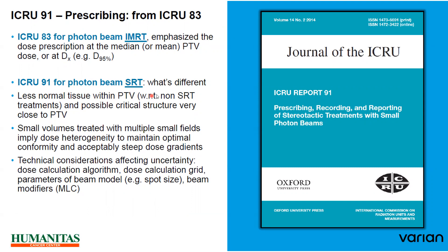In SRT there is less normal tissue within the PTV compared to non-SRT treatment, and possible critical structures very close to the PTV. Small volumes treated with multiple small fields imply dose heterogeneity to maintain optimal conformity and a steep dose gradient. Technical considerations affecting uncertainties include the dose calculation algorithm, dose calculation grid, parameters of the biological model, beam modifiers such as MLCs, and MLC tolerances. Everything must be incorporated before planning SRT cases.